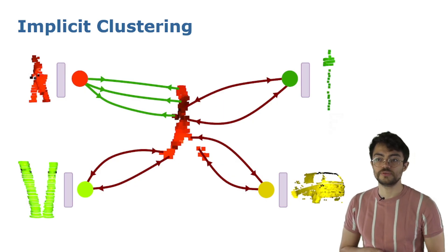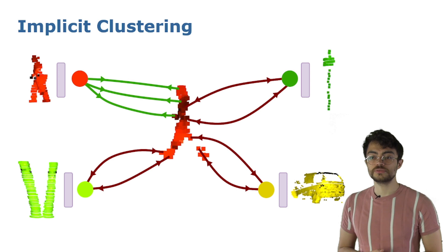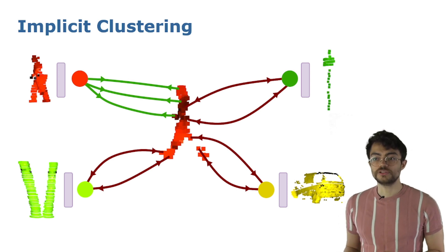With the point-wise features from one view and the mean target representation from the other, we compute the loss to maximize the similarity between each point and its corresponding mean representation and minimize the similarity with all the other segments.